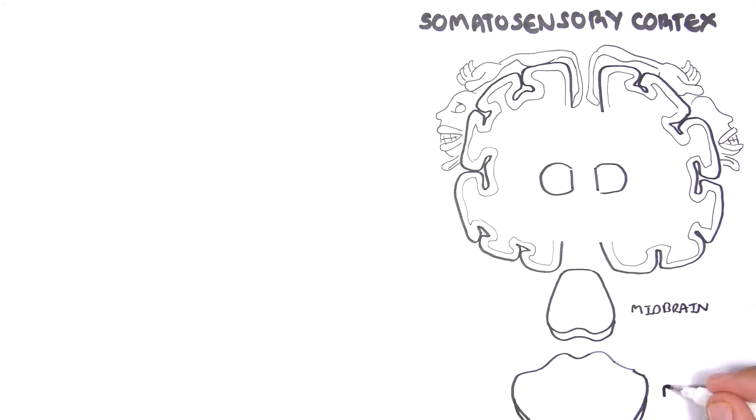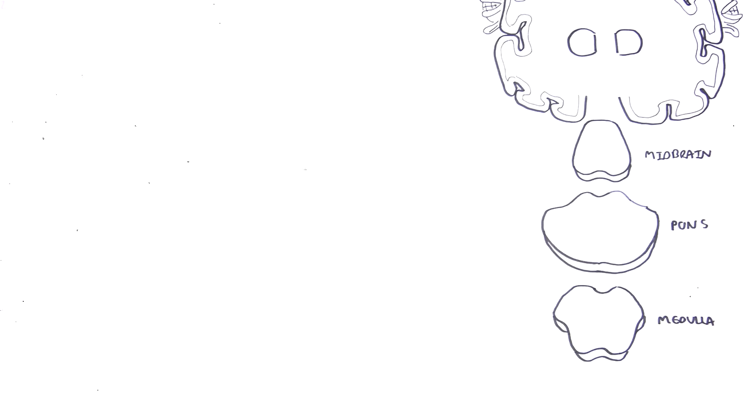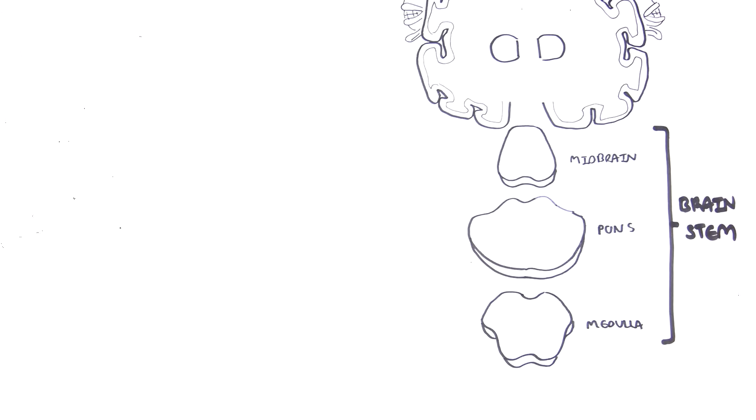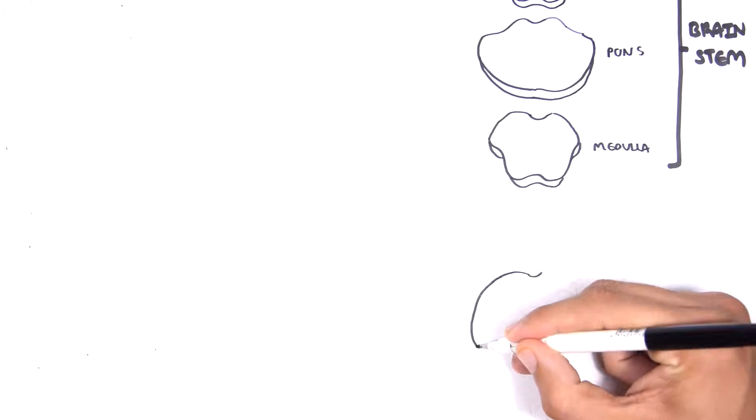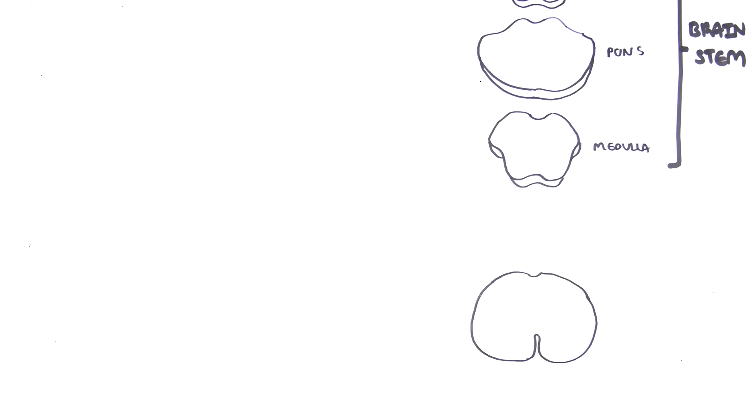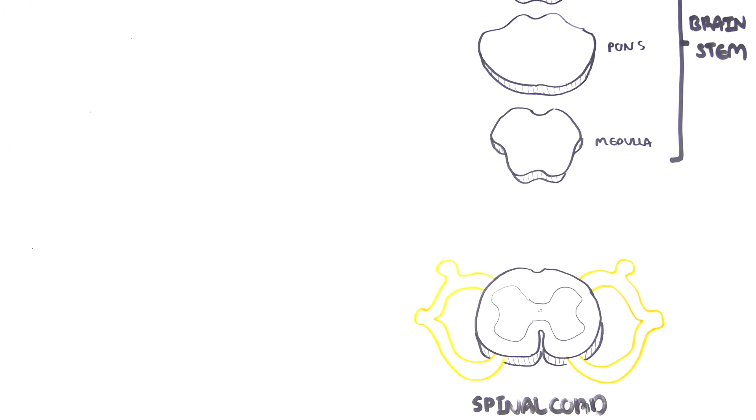These are only sections of the main parts of the brainstem. The brainstem continues on and forms the spinal cord. Here, I'm only drawing one section of the spinal cord. The spinal cord has nerves coming in and out of it represented here in yellow. Here is the right side and left side of the spinal cord.